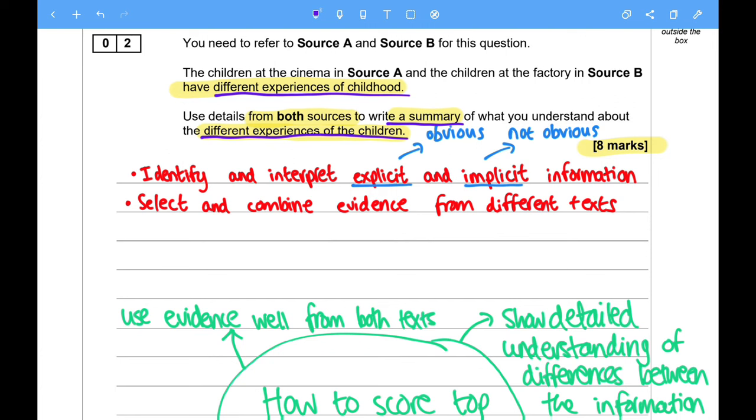So in terms of the assessment objective criteria, what do you have to do? So first of all, identify and interpret explicit and implicit information. So explicit is the obvious information, and implicit is the not so obvious information.